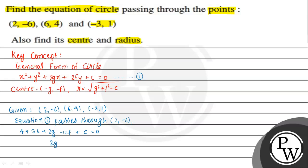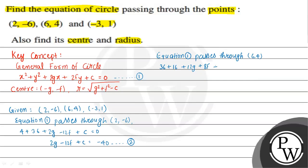Substituting the first point (2, -6) into equation 1 gives us 2g - 12f + c = -40; this is equation 2. When equation 1 passes through point (6, 4), we get 36 + 16 + 12g + 8f + c = 0, so 12g + 8f + c = -52; this is equation 3.